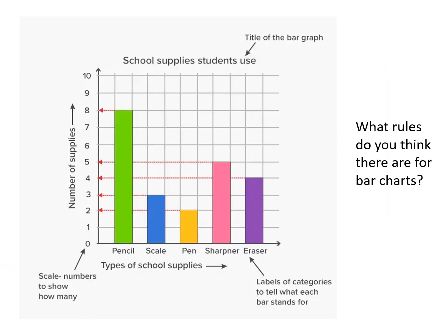For a bar graph, the same rules apply: add your axes, create your scale, and evenly distribute it. Then plot your bars. The difference is that instead of crosses, you have bars. For example, eight pencils here, three rulers there, and so on.